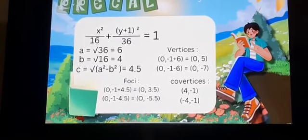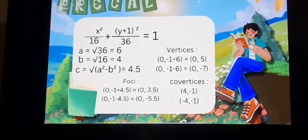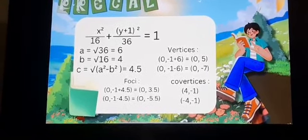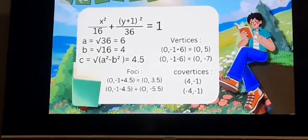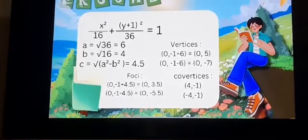To get the vertices or a, we have to square root the highest number given in the equation, so that's 36. So we square root 36, that equals 6.